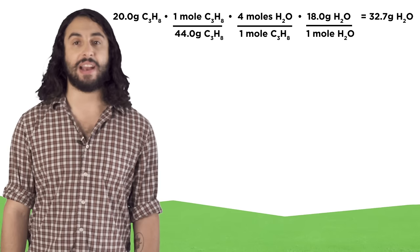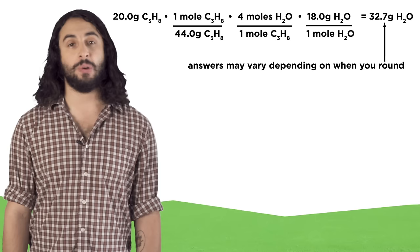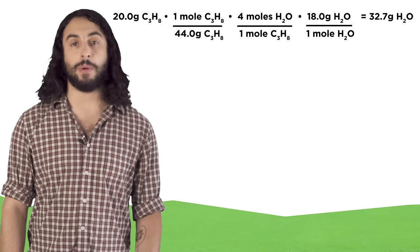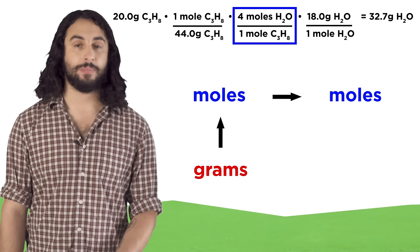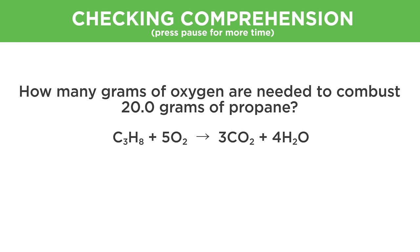These calculations can easily be performed all at once. Just place all of these conversion factors next to one another and make sure the units cancel the way you want them to. If they do, you probably did it right. Common problems of this type will have you convert from a mass of one thing to the moles of that thing to the moles of another thing back to grams for that other thing.